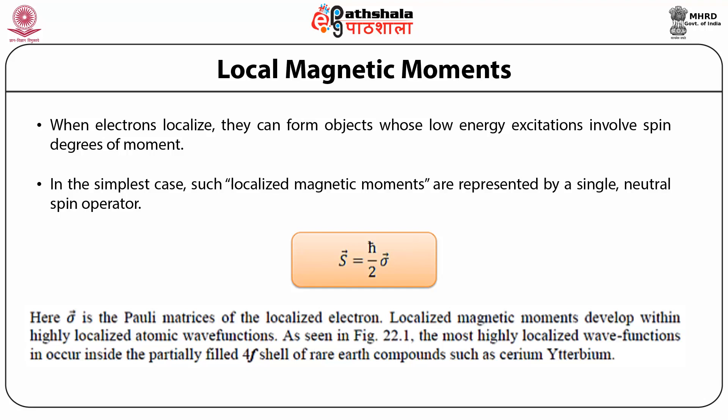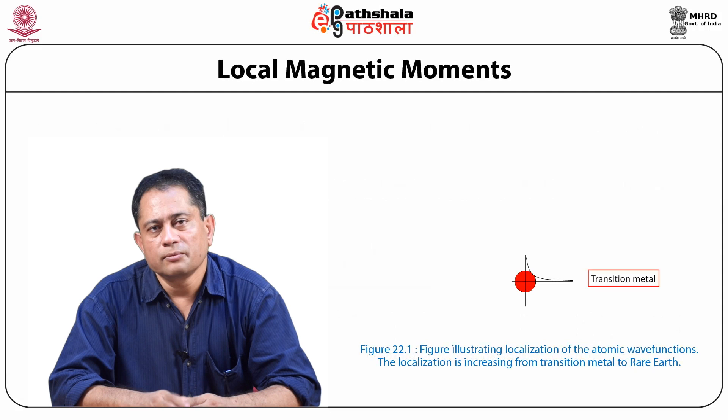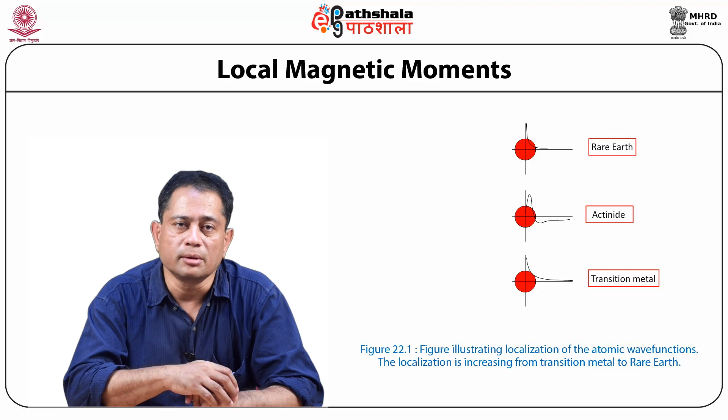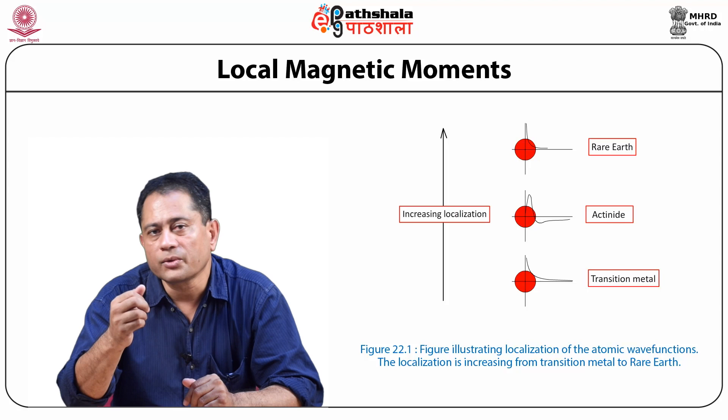The localized magnetic moments develop within highly localized atomic wave functions. The most highly localized wave functions occur in the partially filled 4F shell of rare earth compounds, an example being Cerium and Ytterbium. This is shown in an interesting schematic figure, where going from bottom to top indicates increasing localization. The three red spheres on the right-hand side correspond to the transition metal at the bottom, the actinide in the middle, and the rare earth at the top.